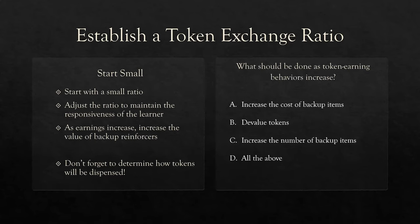Show learners: get tokens quickly, exchange them quickly, get what you want. Establish that economy early and often. As the learner increases their responsiveness and earns tokens more readily, adjust the ratio — what cost five tokens might now cost ten. As earnings increase, increase the value of backup reinforcers too. Think about dispensing: you need to be in control of tokens at all times. In ABA, we commonly make boards and Velcro tokens to them, put them in a cup, or a box.